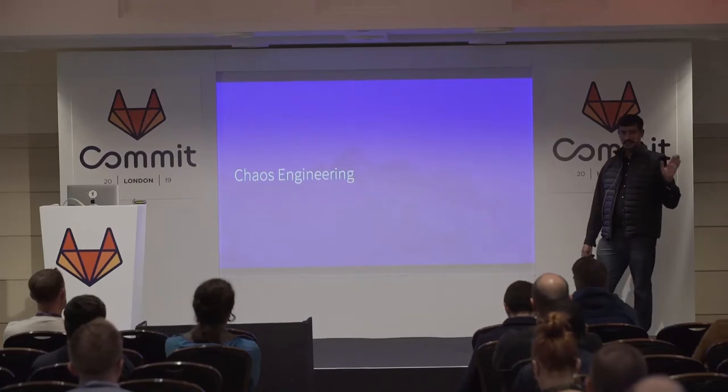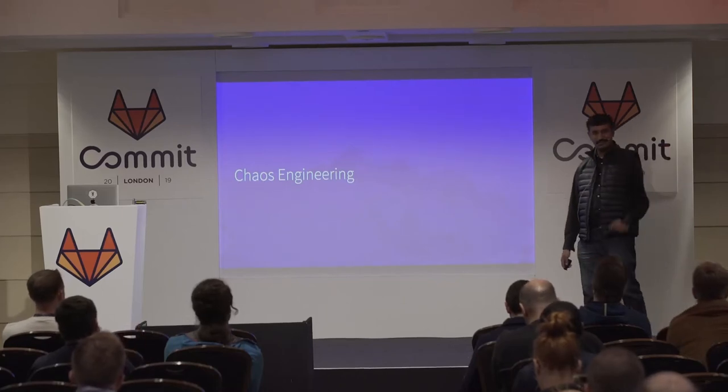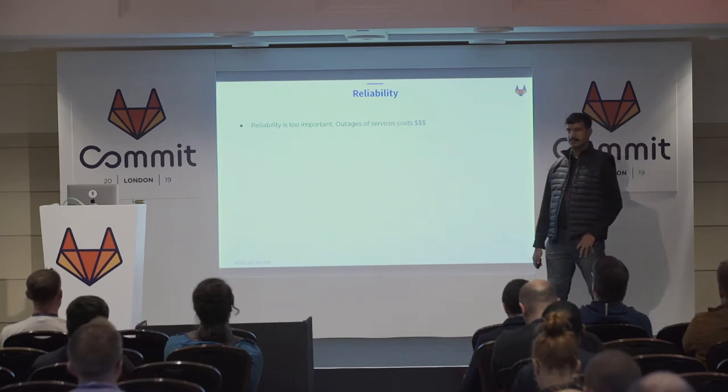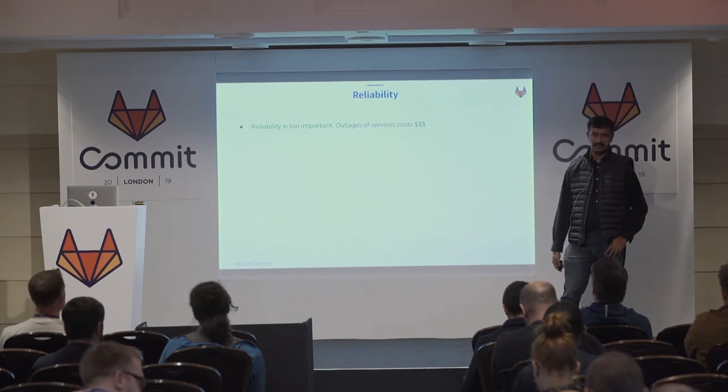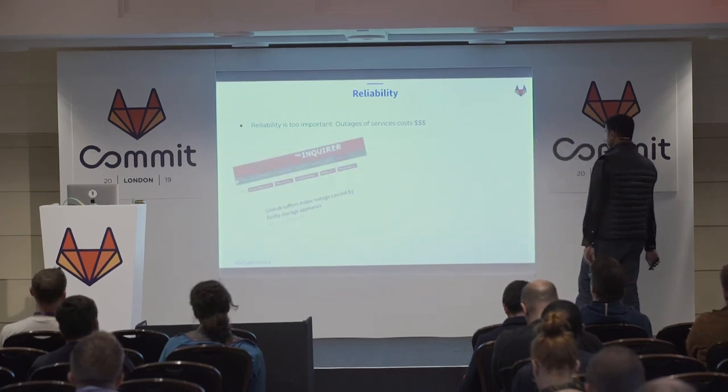We also use chaos engineering, and this is more related to the reliability that everyone is talking about. Before we go to how GitLab and Litmus can help you achieve more reliability for your stateful applications, let's talk a little bit about chaos engineering itself. How many of you practice or have heard of chaos engineering? I see chaos engineering is more popular in London — a lot of conferences happen here. Reliability is too important. What happens if you don't have that reliability? It does not cost little money — it costs a lot of money — and if you are very popular, it causes damage to your reputation as well.